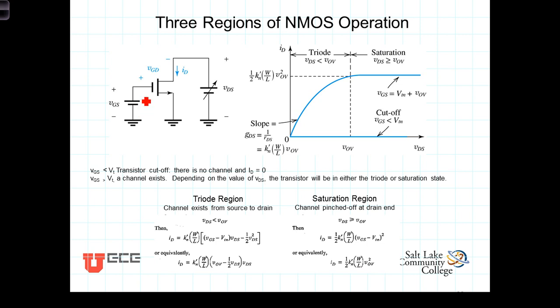Once VGS exceeds that threshold voltage, a channel has been established and there is an overdrive voltage, which is equal to VGS minus VT. Under those circumstances, the transistor is in either the triode region or the saturation region.